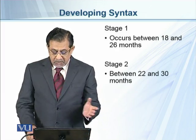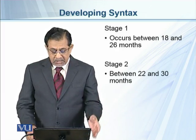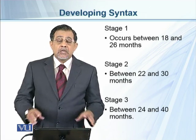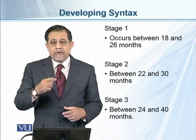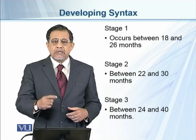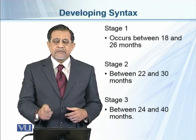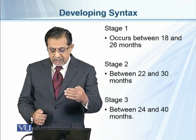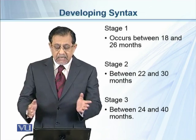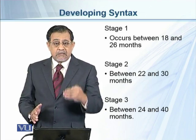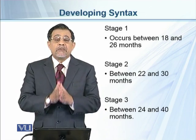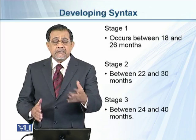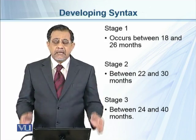Stage 2 starts between 22 and 30 months, and Stage 3 starts between 24 and 40 months. Children start using interrogative sentences in Stage 1, between 18 and 28 months. By Stage 3 they finalize their learning and start making interrogative and negative sentences the way they should be made — the way they are made by adults.